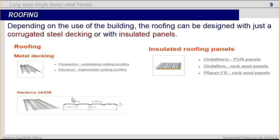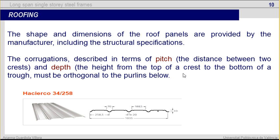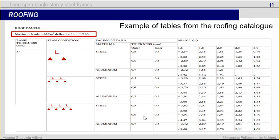Depending on the use of the building, the roofing can be designed with just a cold-formed steel decking, like those in the picture, or with insulated panels like this one. The shape and dimensions of the roof panels are provided by the manufacturer, including the structural specification. The corrugations, described in terms of pitch — the distance between two crests — and depth — the height from the top of a crest to the bottom of a trough — must be orthogonal to the port lengths below. Here we have an example table from the roofing catalog showing span conditions and thickness.